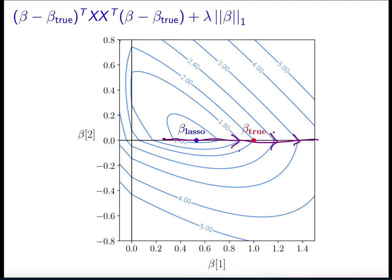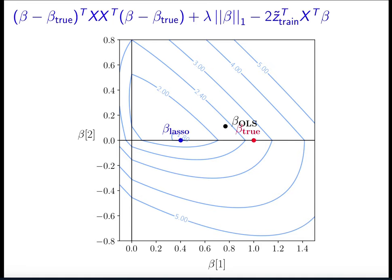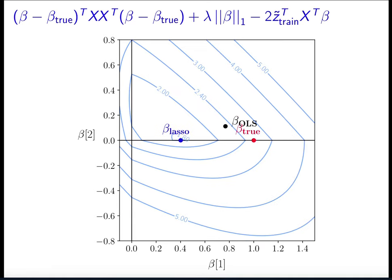What happens is that the minimum of the cost function moves from beta true towards zero — that's bad, but at least it stays sparse. We see that it moves towards zero on this axis, so beta lasso, even though it's not equal to beta true, at least it's a sparse vector. When we incorporate a noise term, if we look at the OLS minimum versus the lasso minimum, neither of them are equal to beta true. Both dance around depending on the realization of the noise, but the lasso tends to be sparse — the second entry tends to be zero, which is never the case for the OLS estimator. That's due to the interesting geometry of the cost function achieved by adding the L1 term.